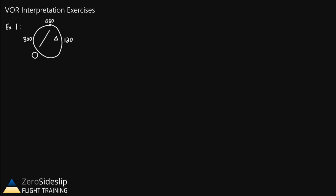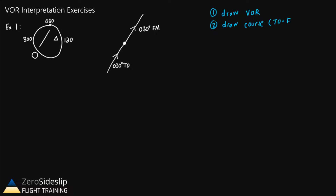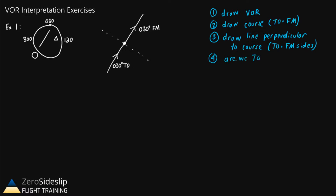Following the process from our last video, step one is to draw the VOR. Step two is to draw the course that is selected, which is 030 — a line going through the VOR station in a northeast direction. This course has two parts: the 030 course to the station, and the 030 course from the station. Step three is to draw a line going perpendicular to our selected course, which divides the area around the VOR into the TO side and the FROM side. Step four is to figure out whether we're on the TO side or the FROM side. Since we have an upward pointing arrow, we know we're on the TO side.